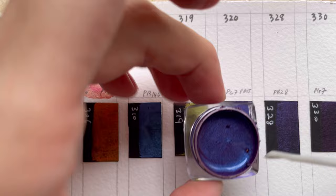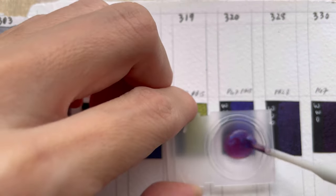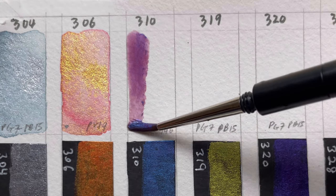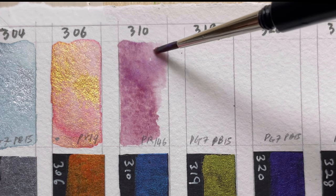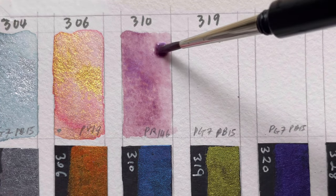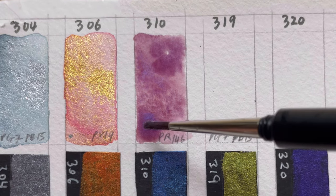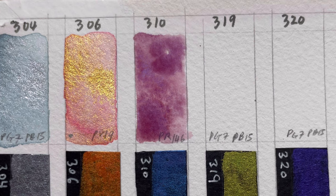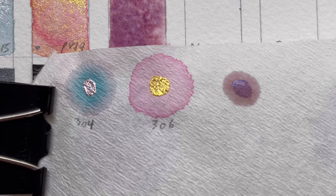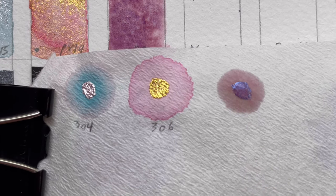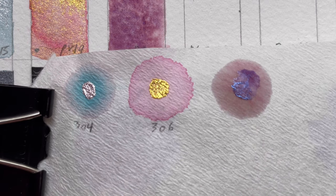The next color is 310. 310 is made from Mika and PR146. It's like a bluish red color. When it paints, it looks like a magenta color with some sort of bluish shimmer on top. The mixture separates out into a center of blue shimmer surrounded by a ring of brownish red color.